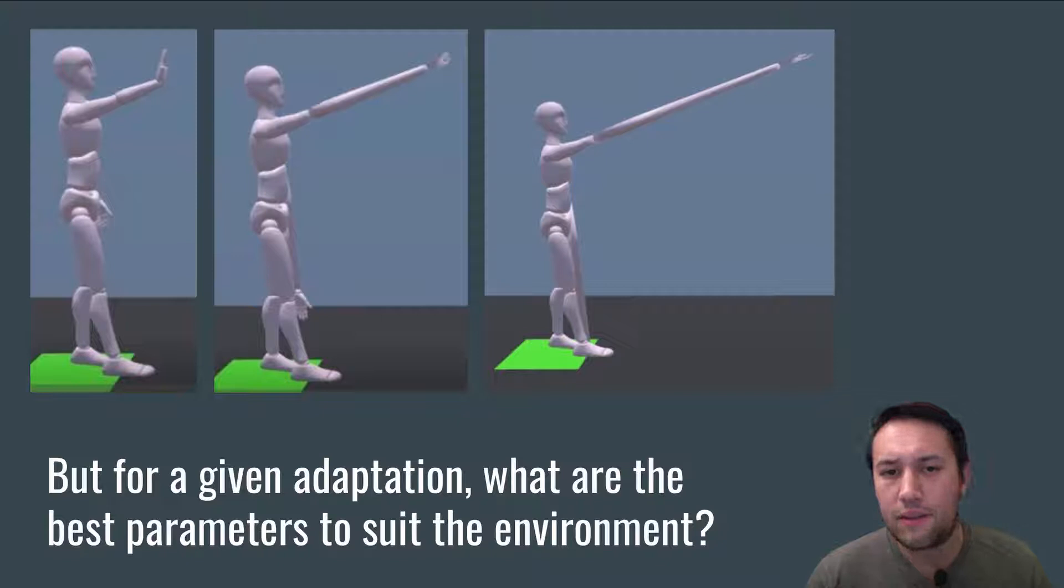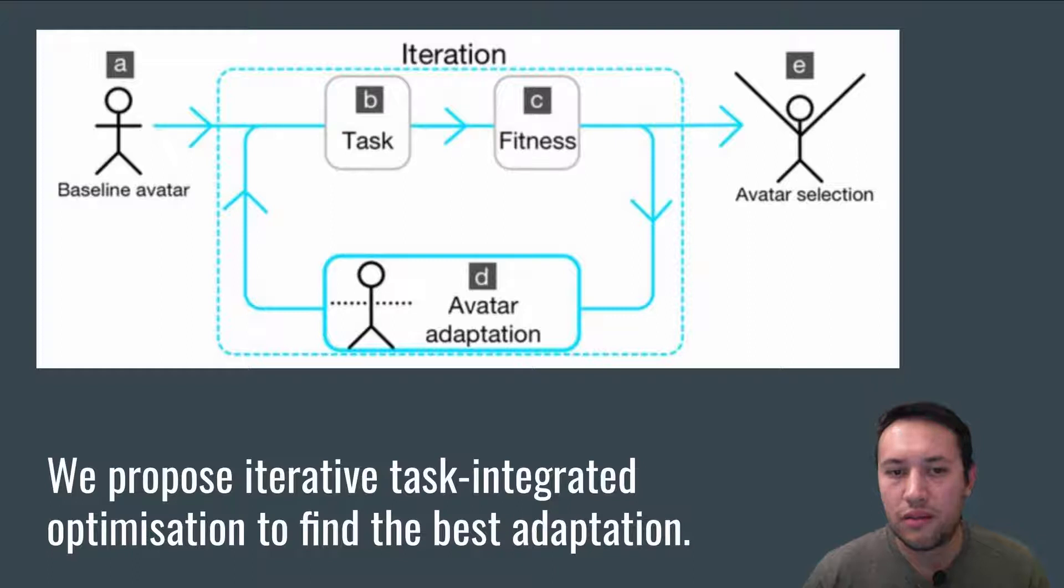To this end, we propose Iterative Task Integrated Optimization, a generic approach to finding the best adaptation for a particular task or environment, and this is how it works.